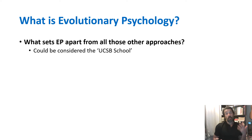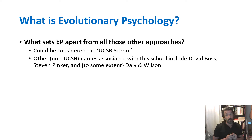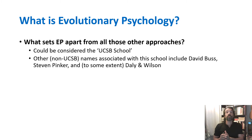EP is so associated with UCSB that we could call it UCSB-school evolutionary psychology. But it's also associated with some well-known names who are not at UCSB. David Buss, who wrote the textbook from which I've also assigned readings, is a professor at the University of Texas and a famous evolutionary psychologist. Steven Pinker at Harvard is a cognitive psychologist who's probably the most famous popularizer of evolutionary psychology, having written well-known books adopting the Tooby and Cosmides approach, such as The Language Instinct, How the Mind Works, and The Blank Slate. And then Martin Daly and Margo Wilson, another husband and wife team, have adopted a style of thinking about evolution and behavior that is quite sympathetic and consistent with the Tooby and Cosmides approach.